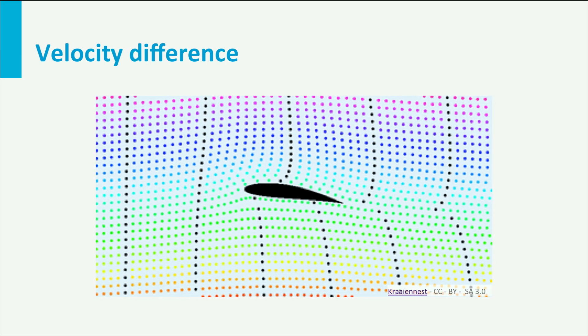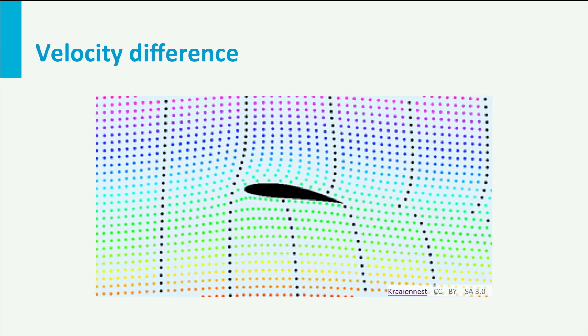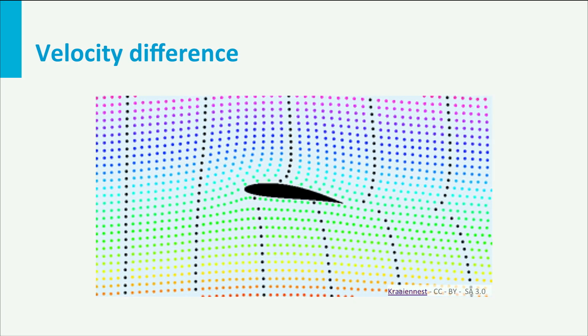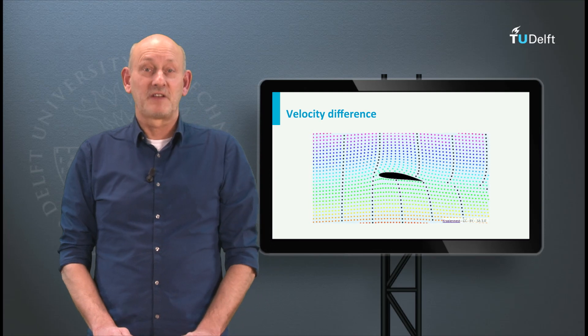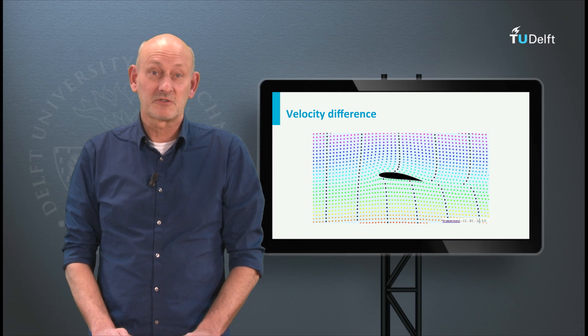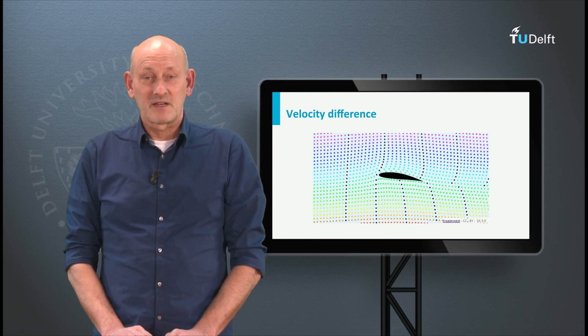Consider two flow particles right next to each other in the free stream, of which one will pass over the upper surface of the airfoil and the other over the lower surface. There is a common misconception about the generation of lift, which says that these particles should arrive at the same time at the trailing edge, but from this animation you see that this is not the case.